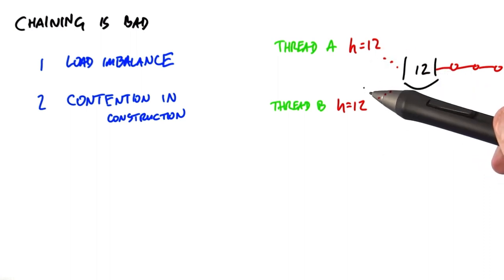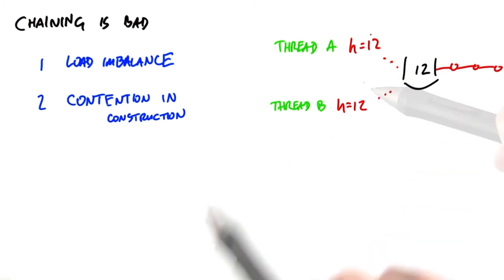So any serialization like this within a parallel algorithm is definitely undesirable as well. The conclusion here is that chaining is a suboptimal strategy if we're dealing with parallel hash tables. So we're going to turn to a different method.